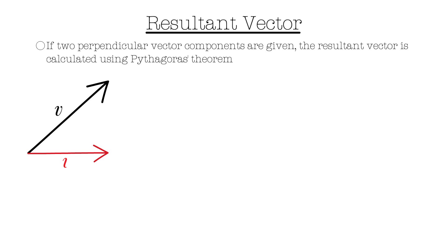We can draw the vector v with its x and y components. For example, the resultant velocity is given by v squared equals vx squared plus vy squared.